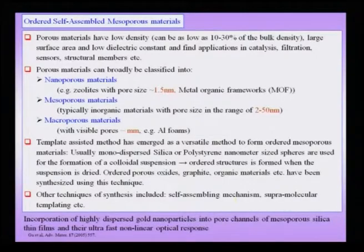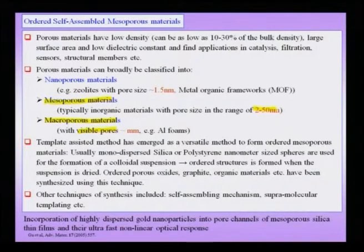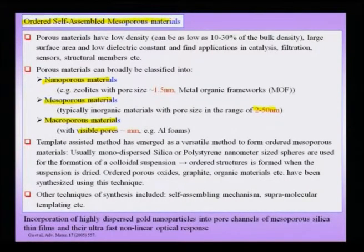Like ordered crystals, we can also have ordered pores, and these pores can exist at multiple length scales. They can be macroscopic (visible to the naked eye), mesoporous (pore size ~25 nm), or nanoporous (extremely small pores). We will now describe ordered self-assembled mesoporous materials, while also briefly discussing nanoporous and macroporous materials.